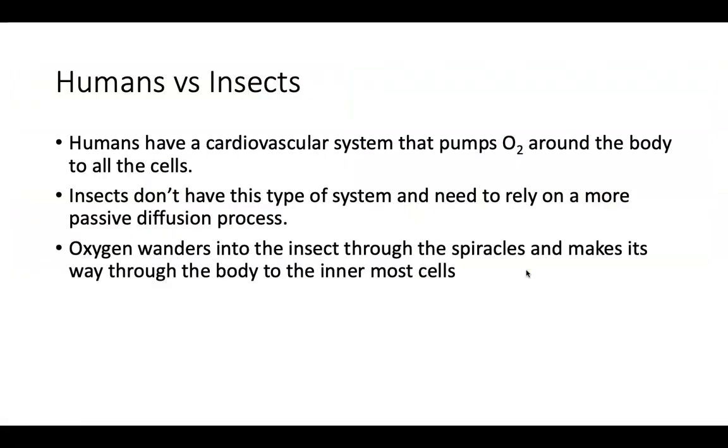Now, if we compare insects to humans, humans have a cardiovascular system, and that cardiovascular system is pumping the oxygen around our body to all of the cells in our body. Now, insects don't have this type of a system, so they rely on a more passive diffusion process, like that opening the window. Now, oxygen will wander into the insect through the spiracles, and it'll make its way through the body to the innermost cells. So humans and mammals, they have a specific system to make sure that every cell in their body gets oxygen, whereas insects kind of have this passive system, where the oxygen just kind of filters its way through, and hopefully will make its way to the cells that need it.